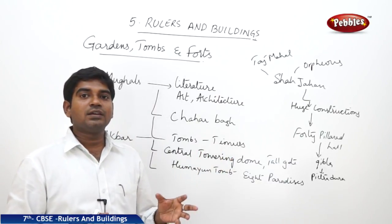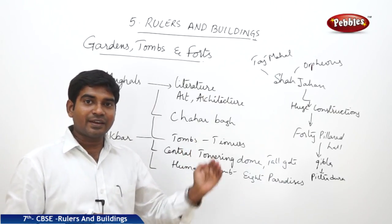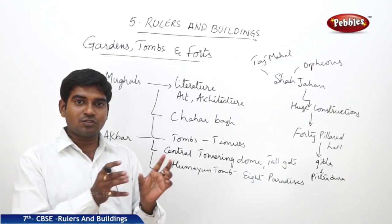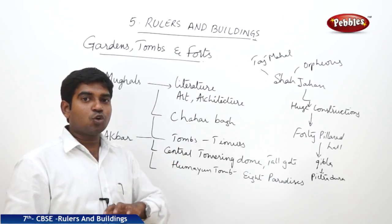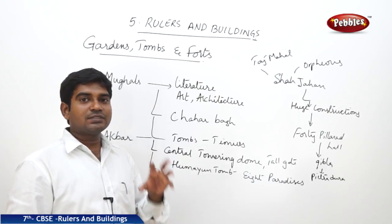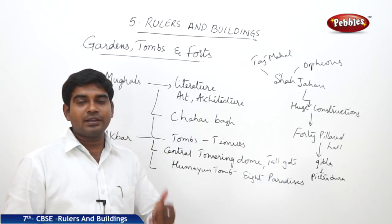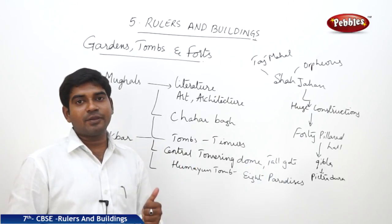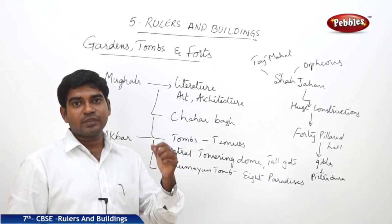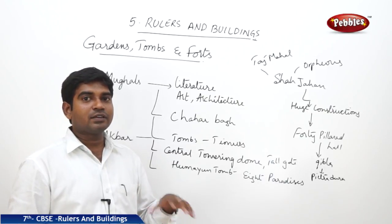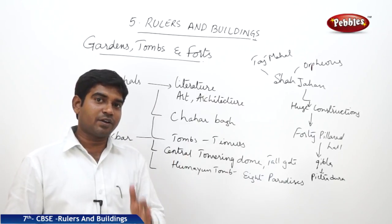Later, he constructed the Taj Mahal on the riverfront of the River Yamuna. On the other side, he had fantastic gardens laid out in symmetrical shapes with equal balance. He gave access to the Yamuna riverfront only to his eldest son Dara Shukoh; all others were advised to build their houses far away from the Yamuna riverfront in the city.